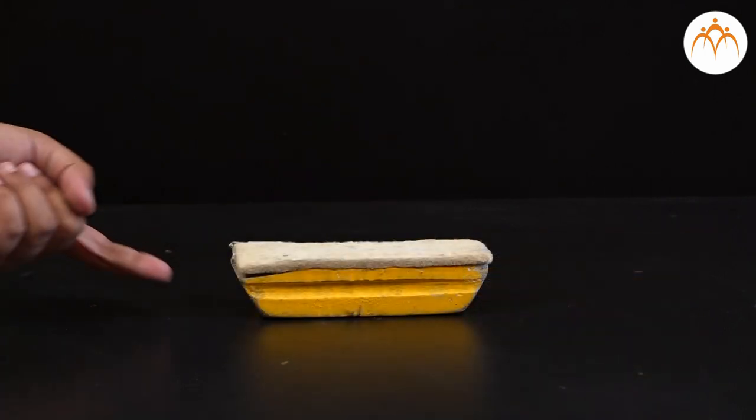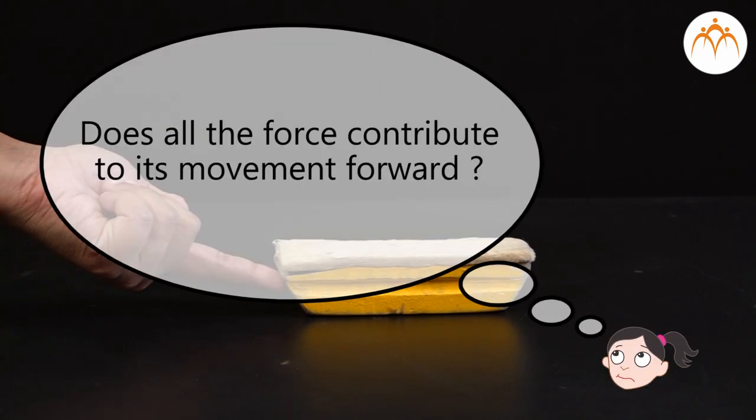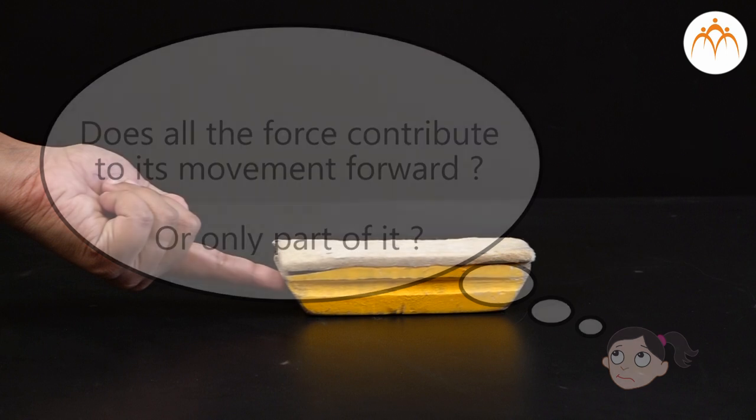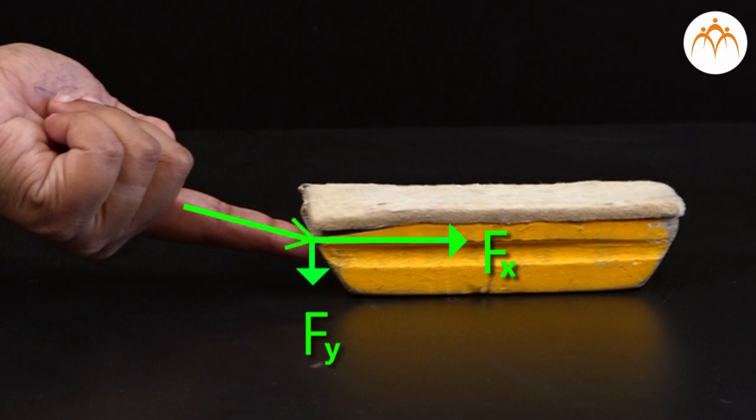I can change it even more and move the duster very easily. When I apply force at an angle, does all the force contribute to its movement forward or only part of it? When force is applied at an angle, some part of it acts horizontally and some of it vertically. How much of it is horizontal depends on the angle it is applied. If the angle between force and horizontal is theta, then cos theta part of that force will act in horizontal direction and the rest in vertical direction.